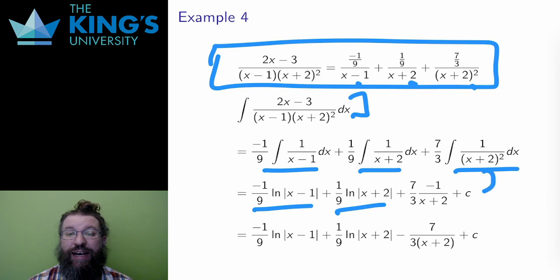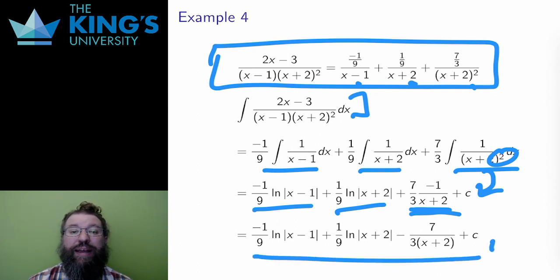However, the second has a higher power of the linear factor in the denominator, and this was the fourth and final type from the first video. The antiderivative from that first video of 1 over x plus 2 squared is negative 1 over x plus 2. That's the last term, so now I get a complete antiderivative of this rational function.